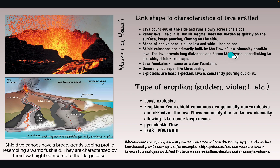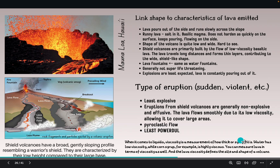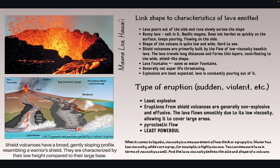Shield volcanoes are primarily built by the flow of low-viscosity basaltic lava — they're kind of like lava fountains. They're not super life-threatening and explosions are least expected, as lava is constantly pouring out. They are usually characterized by their low height, not really a conical shape, and are the least powerful type. Just a reminder: viscosity is a measurement of how thick or syrupy a liquid is — water has low viscosity while corn syrup has high viscosity. You can measure lava in viscosity as well, and the lava viscosity defines the size and shape of a volcano.